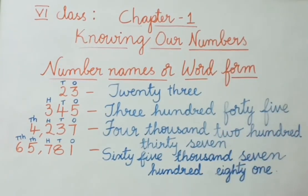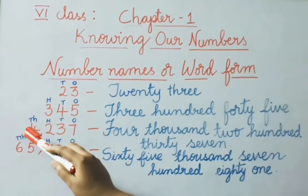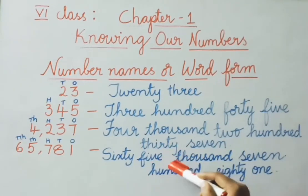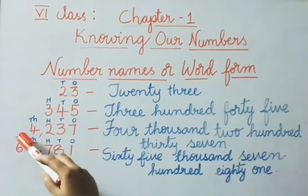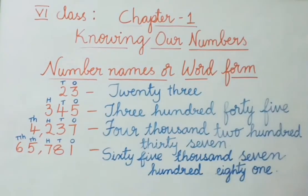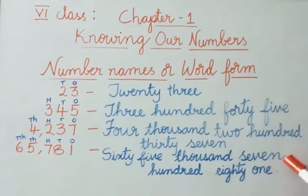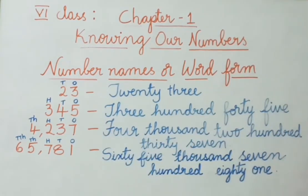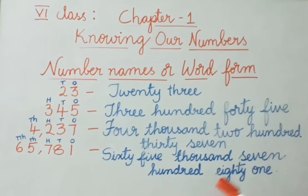See the next example: 65781 — a 5-digit number. The first digit is in the 10,000s place, so 6 and 5 give us 65,000. Hundreds place is 7, so 700. Tens place is 8, so 80. Ones place is 1, so write 1. Overall, the number name is 65,781.